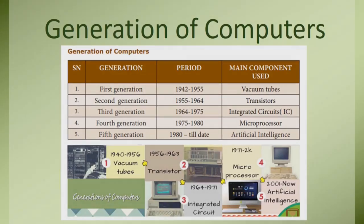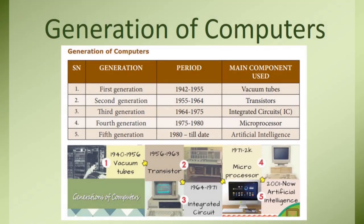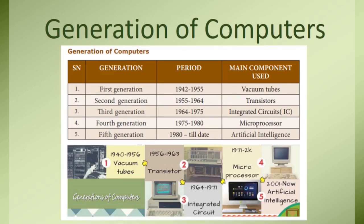First generation computer, in the period 1942–1955, used vacuum tubes. Second generation, 1955–1964, the main component used was transistors. Third generation, 1964–1975, used integrated chips. Fourth generation, 1975–1980, used microprocessors. Fifth generation, 1982 till date, uses artificial intelligence like robots.